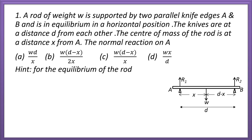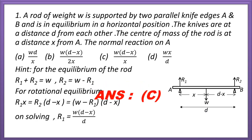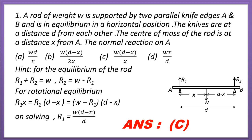Question number 1. A rod of weight W is supported by two parallel knife edges A and B and is in equilibrium in a horizontal position. The knives are at a distance D from each other. The center of mass of the rod is at a distance X from A. The normal reaction on A is — there are four options, you have to select the correct option. Go through the figure.